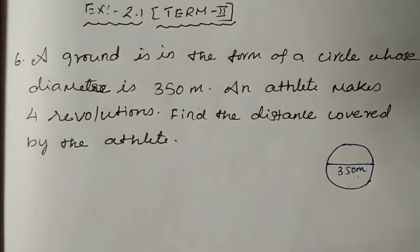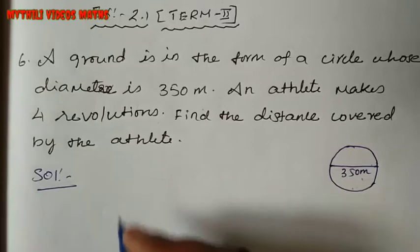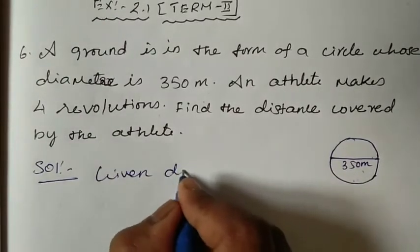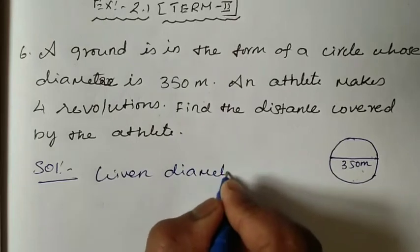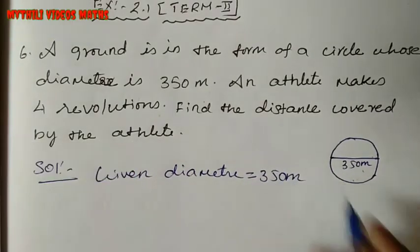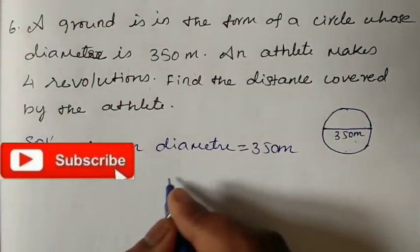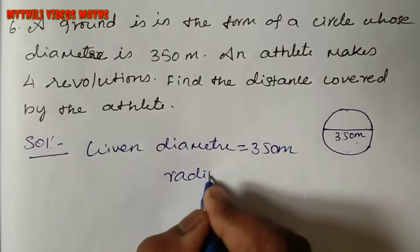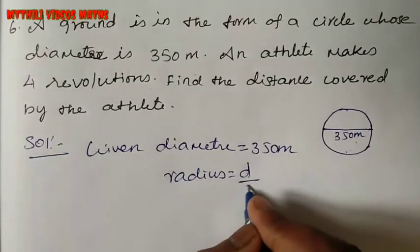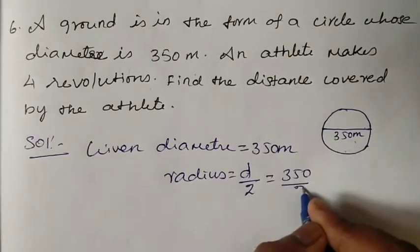4 revolutions — note the answer. Just write what is given. Given: diameter is equal to 350 metres. Since we are given the diameter, we need to find the radius. So radius is equal to diameter divided by 2.